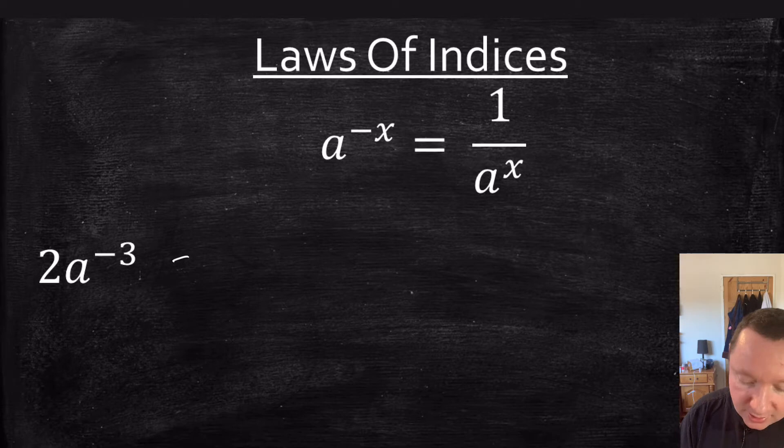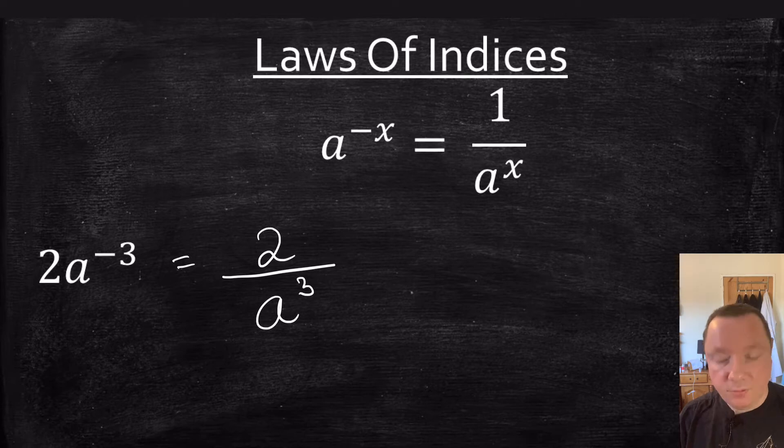Then our 2 can stay where it is, but it's over a cubed. Negative 3 is turned into positive 3 underneath the fraction.